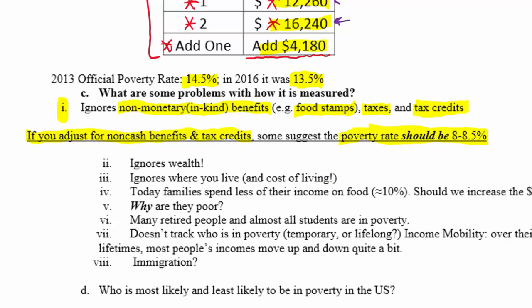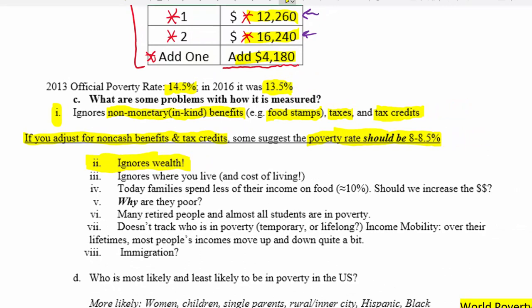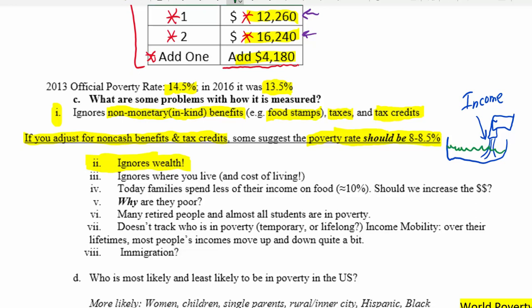Another problem with the way we measure poverty is that it ignores wealth. Wealth is a stock of money — picture a bathtub where income is money flowing in, and wealth is how much money has piled up in the bathtub. If you have more income coming in than money going out, you build up wealth.